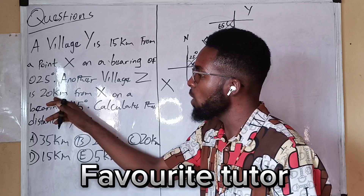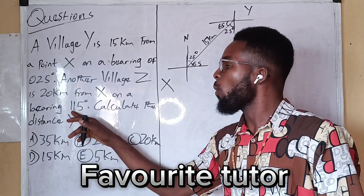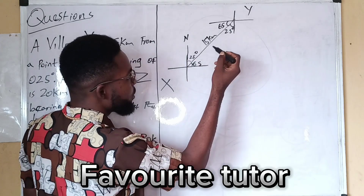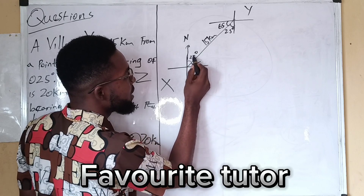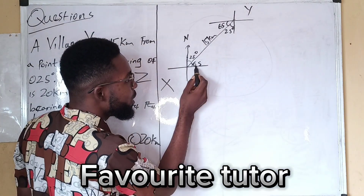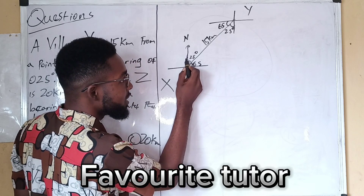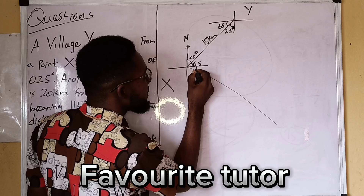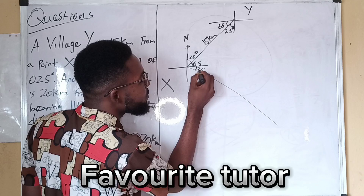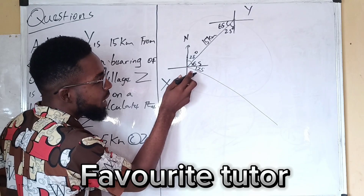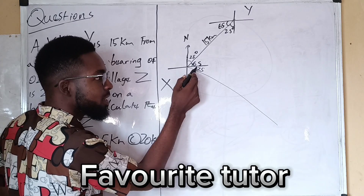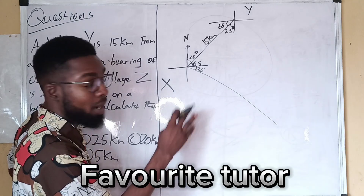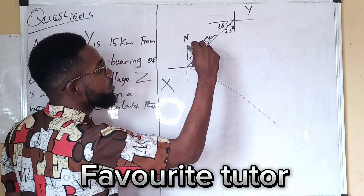Another village Z is 20 kilometers from X on a bearing of 115 degrees. Please take note of this. Bearing starts from north. This is 90 from here to here. So we are going to count: 90 plus 25 is 115. That means from this north to this place is 115 degrees.